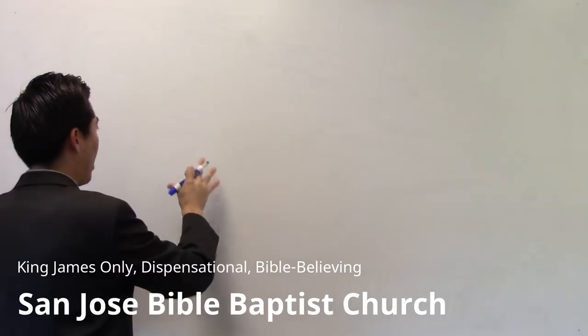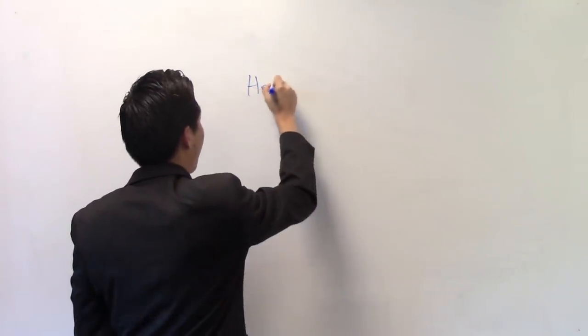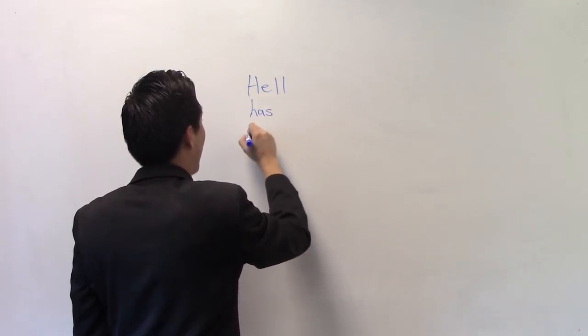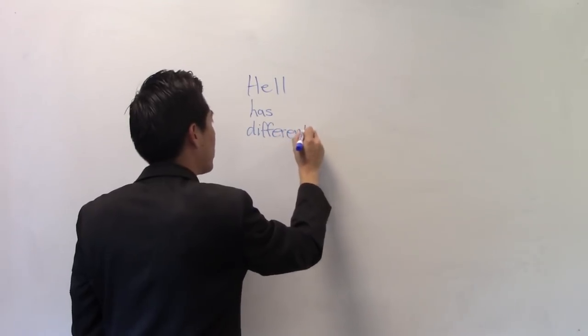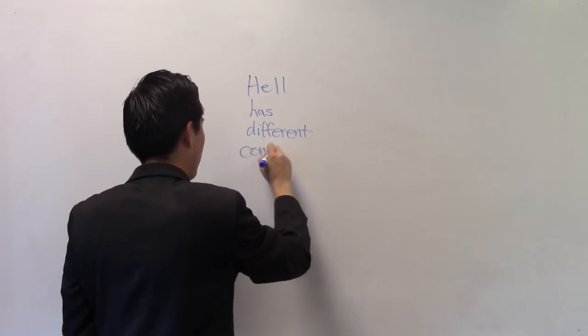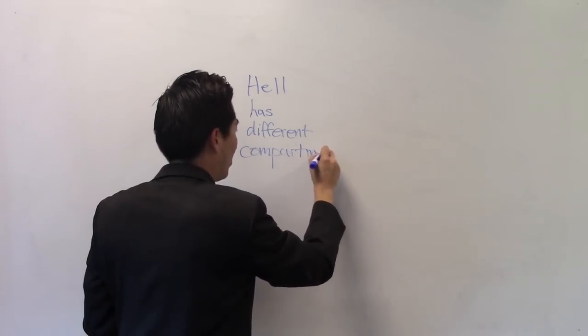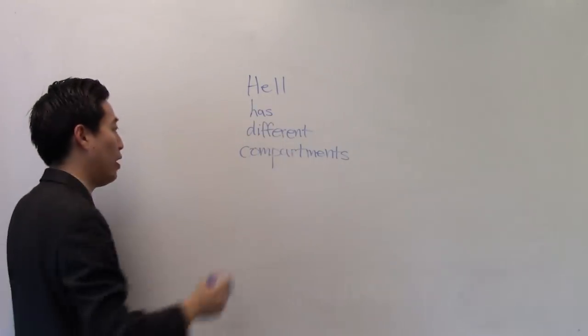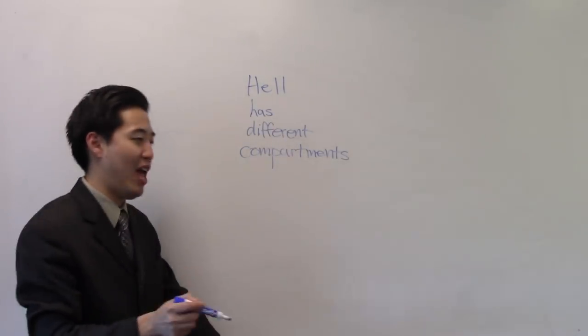One of the things that dispensationalists believe in is that hell has different compartments. When you believe that hell has different compartments, everything is going to click and make sense. You've got to realize that not everyone is going to the same place in hell. They're all going to hell, but they're not going to the same place, the same compartment in hell.